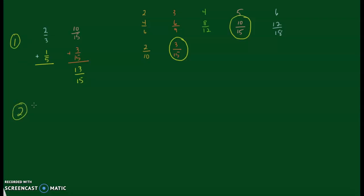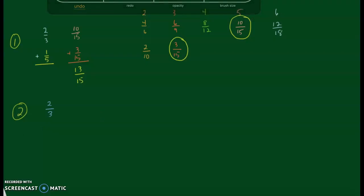Strategy two is called the quick common denominator strategy. For this strategy, let's start with two thirds plus five ninths.